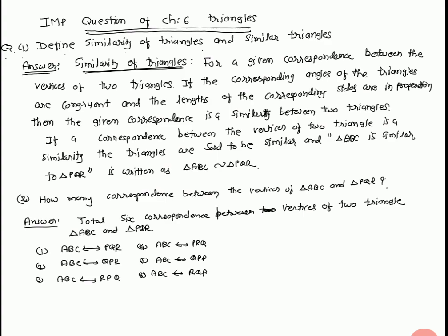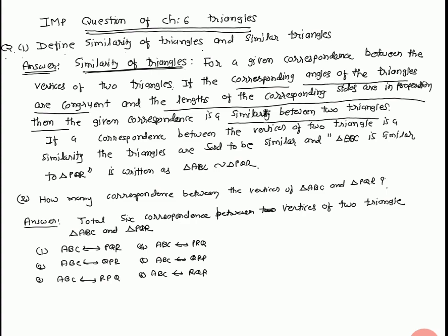Now we start the answer. Similarity of triangles: for a given correspondence between the vertices of two triangles, if the corresponding angles are congruent and the lengths of corresponding sides are in the same proportion, then the correspondence is said to be a similarity between two triangles.